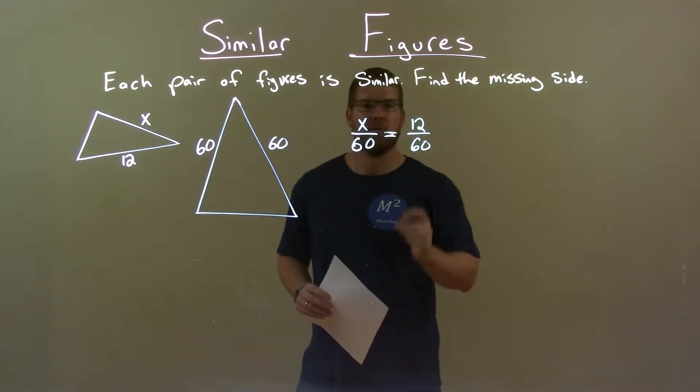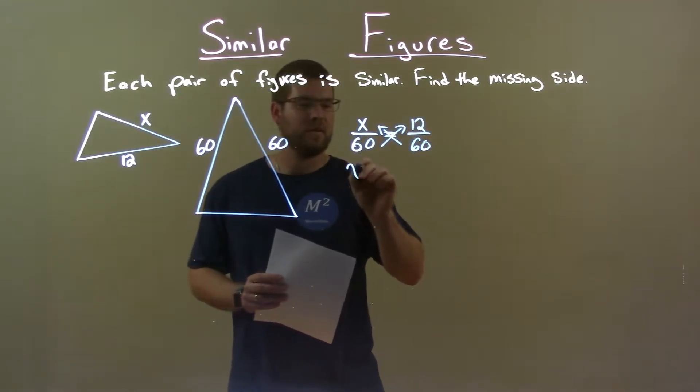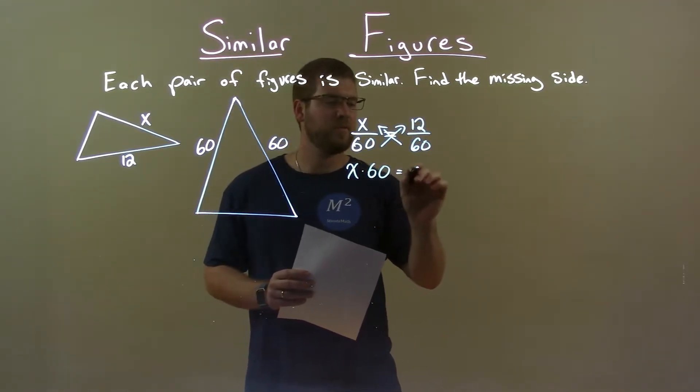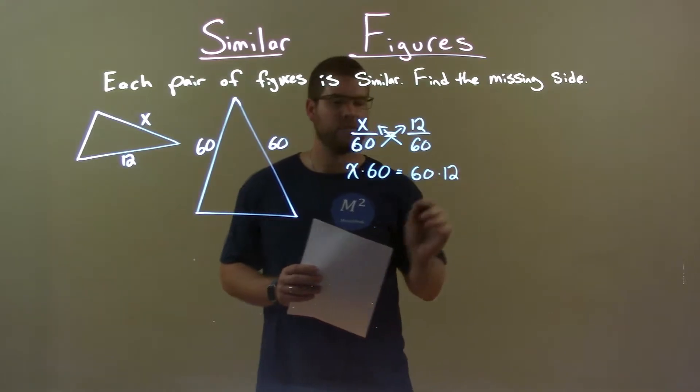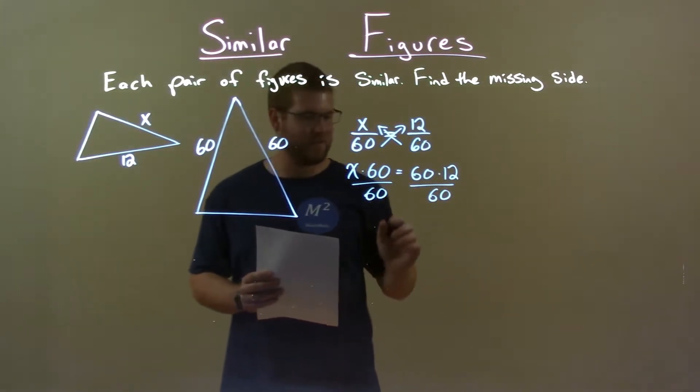And now, let's solve for X. We cross multiply here. X times 60 is equal to 60 times 12. We then divide by 60, and hopefully you could have seen the answer from the beginning, but it's okay.